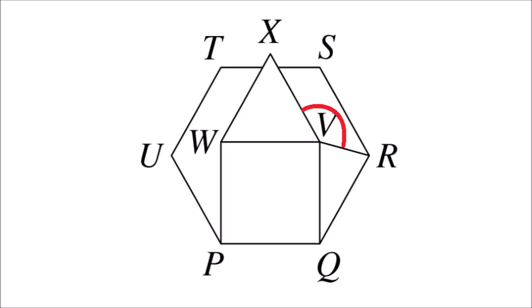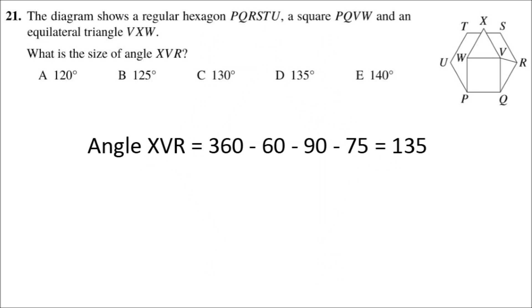That means that angle XVR is going to be 360 minus 60 minus 90 minus 75, which leaves us with the answer of D, 135 degrees.